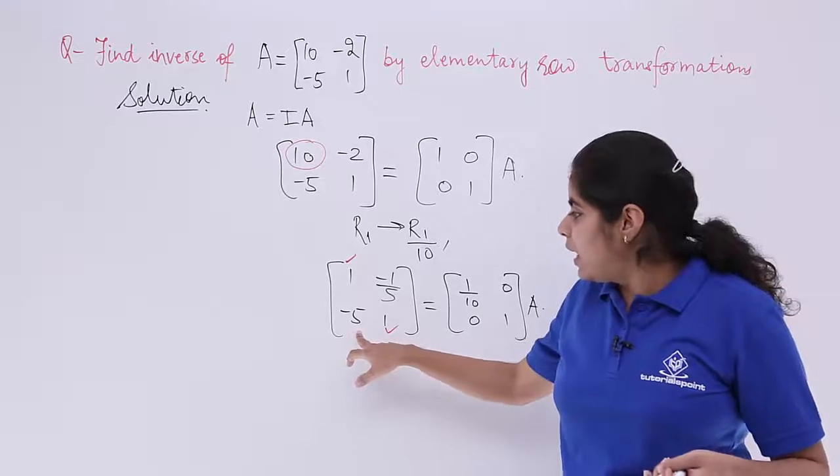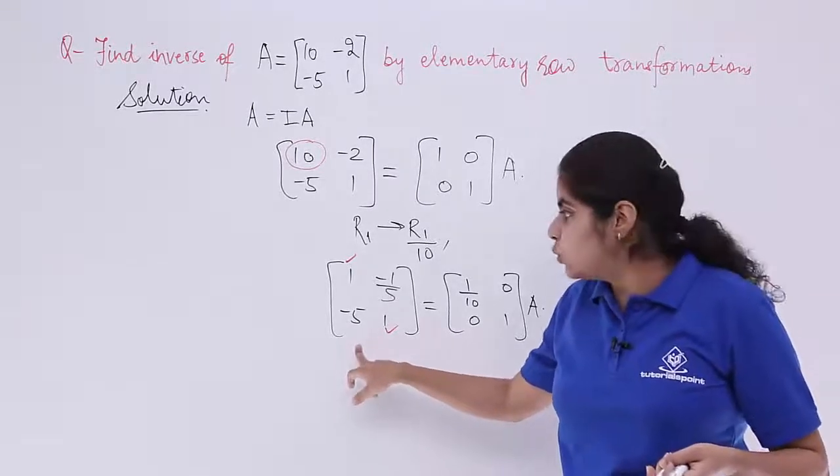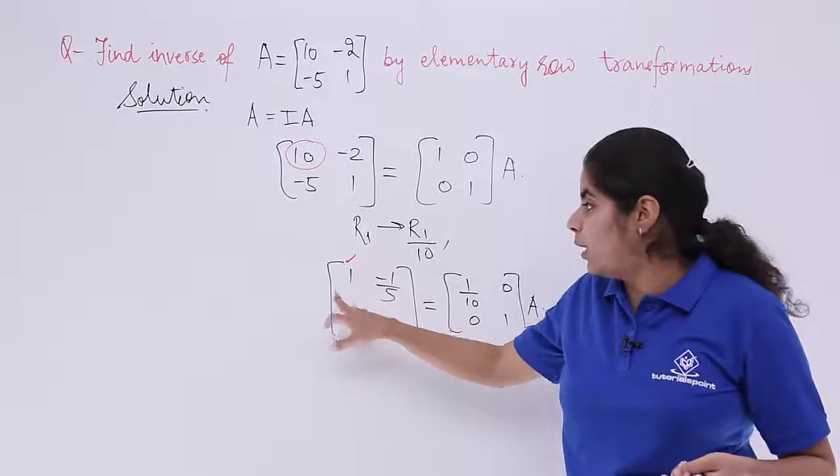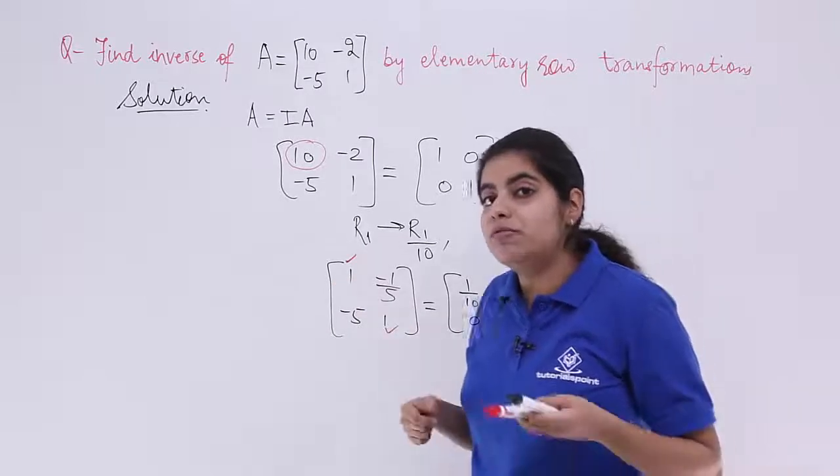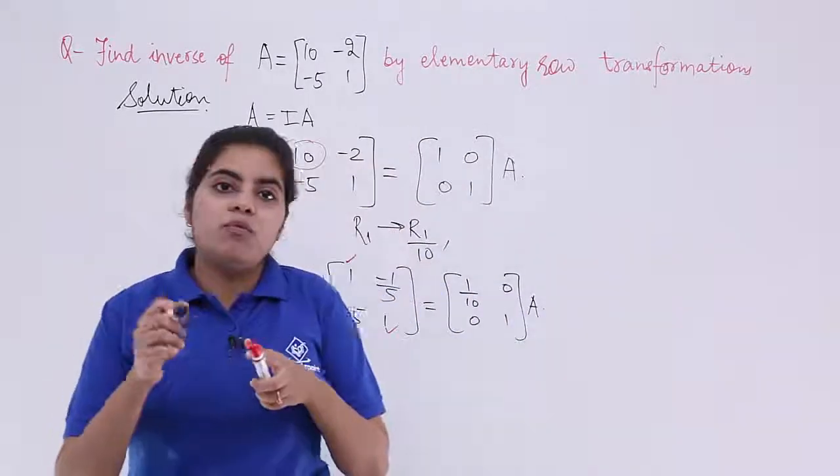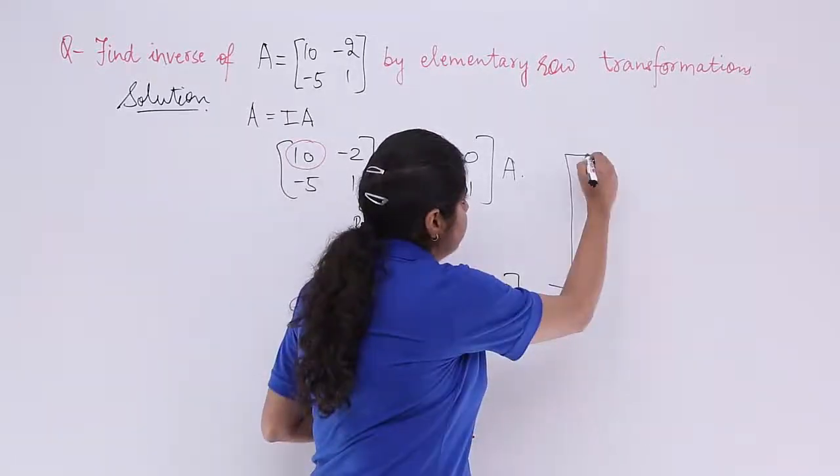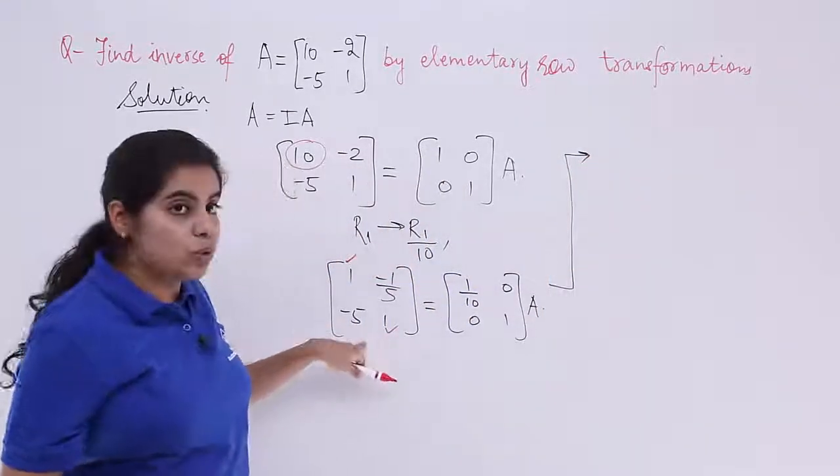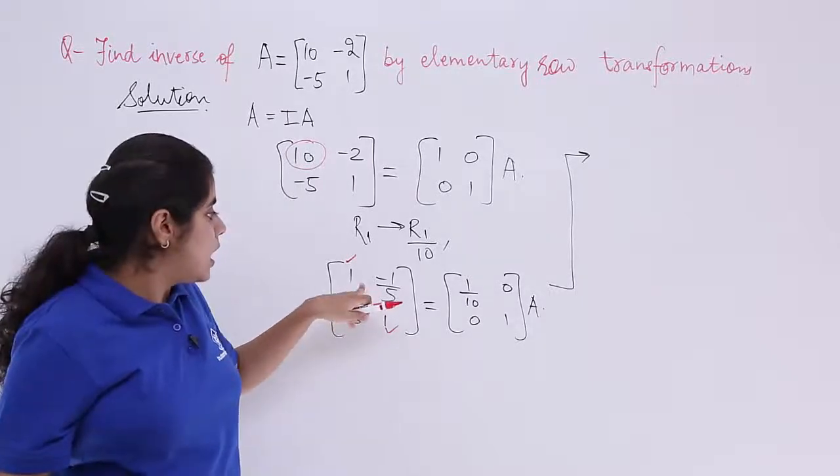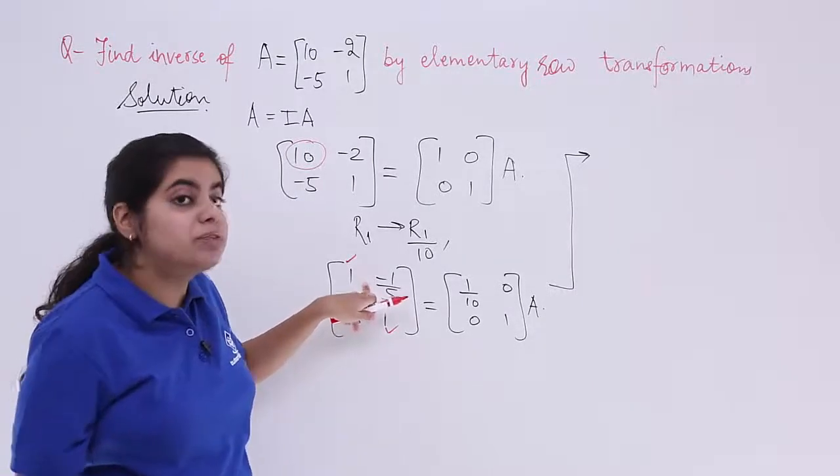So if I apply R2 in the manner that R2 plus 5 R1. R2 plus 5 R1. Why? Because we need 0 there. What will happen? Let's see. So the next operation I am writing here. It will be on the R2, R2 and it will be added with 5 R1.